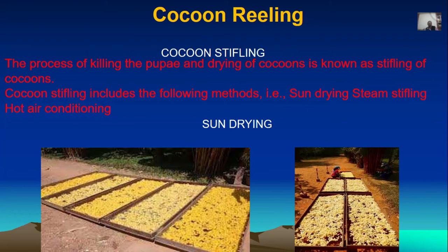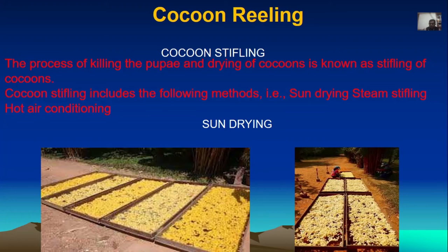After cocoon formation, the most important part is extraction of silk fiber. On average, from a single quality silkworm we can unravel 800 to 900 meters of silk fiber. An A-grade cocoon has the highest range and the highest cost.